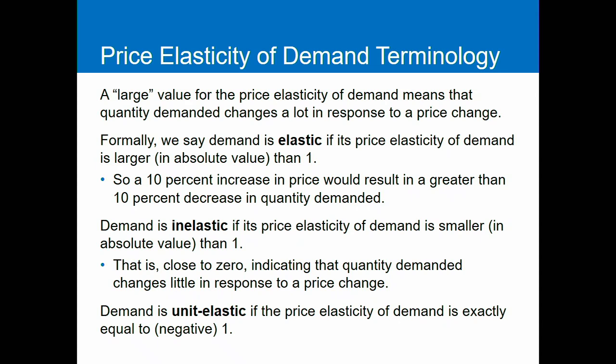Let's look at a quick example with bagels. If there's a 10% decrease in price, there will be a 20% increase in quantity demanded. So the price elasticity of demand is simply the 20% increase divided by the 10% decrease, which equals negative 2. The absolute value of that equals 2. So that's going to be elastic because the absolute value of quantity is greater than 1.